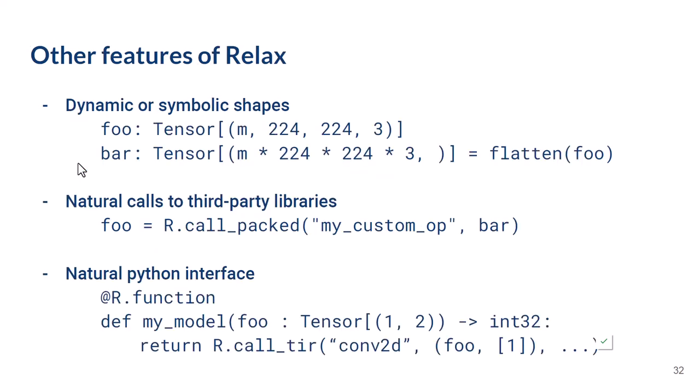Relax also brings support for dynamic shapes to TVM, so models with some variability in shape can now be represented. In particular, symbolic shapes — which we think will be interesting in a TinyML context — live well in Relax. You can now use a variable in a shape expression and describe that the output of a flatten operation is the product of the previous layer's shape.